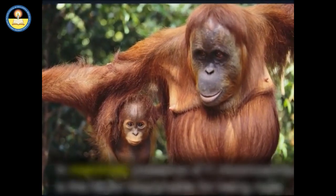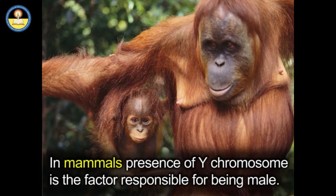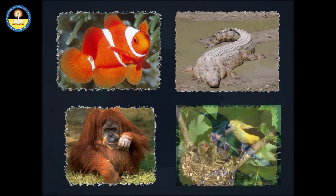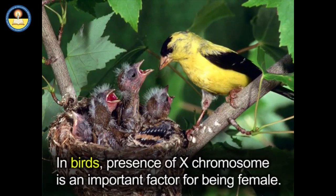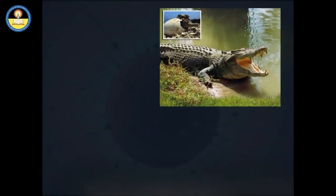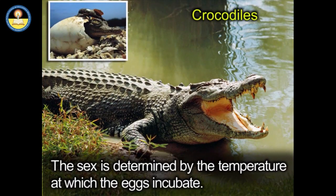For instance, in mammals, presence of the Y chromosome is the factor responsible for being male. However, in birds, presence of the X chromosome is an important factor for being female. In alligators, crocodiles, etc., the sex of the offspring is actually determined by the temperature at which the eggs incubate.